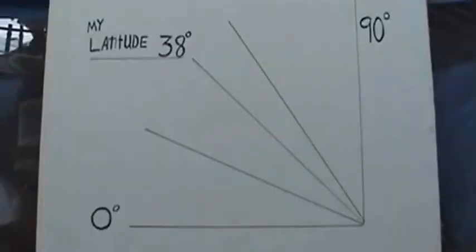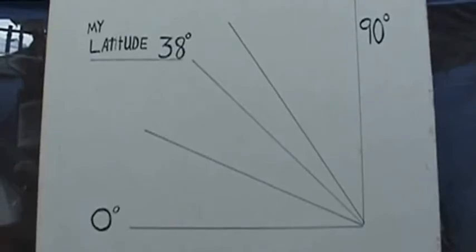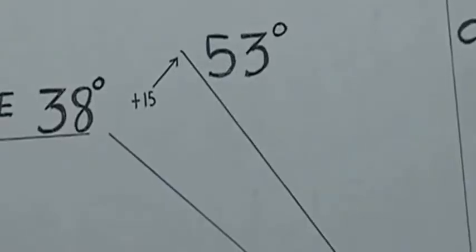Next, place your latitude on the center line. Now add 15 degrees to your latitude and place that number on the line just above your latitude line. Now subtract 15 degrees from your latitude and place that number on the line below your latitude.